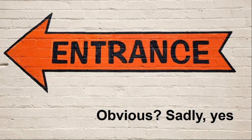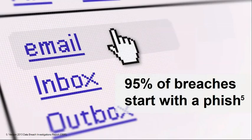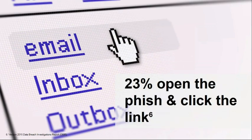Now, how do they get in? When it comes to owning your organization, your network, your users, the entrance to your business is sadly very obvious. Network-style attacks — all the glamorous hacking of hardware you read about — are quite complex and hard to do. Sending someone an email is relatively simple and cheap. We started with the statistic that 95% of breaches start with a phish — which could be spear phishing, classic phishing, or a weaponized attachment attack. 23% of people that receive that message will open it and click on the link.